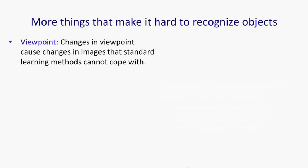One other thing that makes it hard to recognize objects is that we have different viewpoints. So there's a wide variety of viewpoints from which we can recognize a 3D object. Now, changes in viewpoints cause changes in the images that standard machine learning methods cannot cope with.